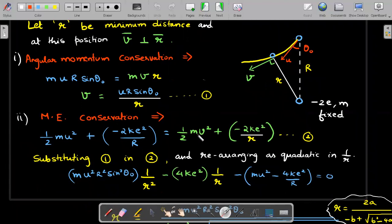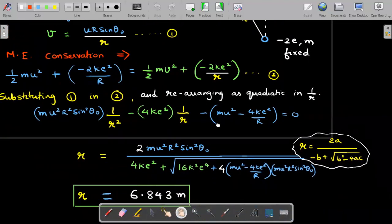I have marked the variable required in yellow. This v has to be replaced by substituting one into two, and I'll rearrange this in the form of a quadratic in 1/r. This would be a 1/r² term after substitution, and this would be 1/r term, and this entire thing would be a constant.